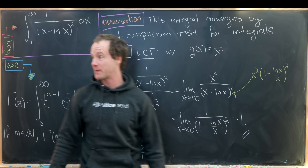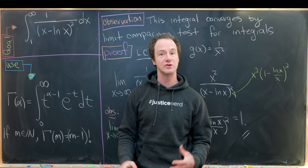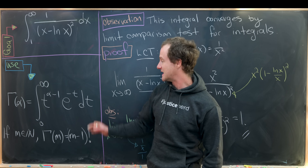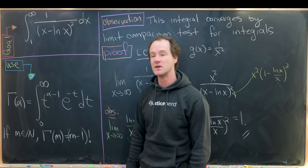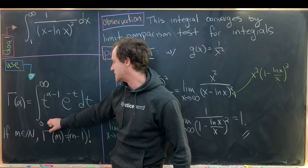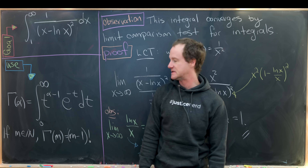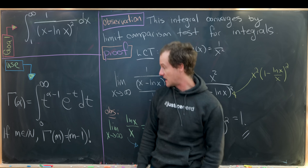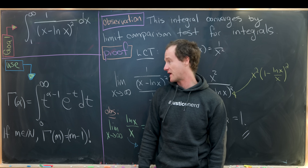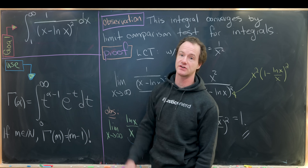Now we're ready to find its value expressed as an infinite sum, using the integral representation of the gamma function. We define gamma(α) as the integral from 0 to infinity of t^(α−1) e^(−t) dt, and if m is a natural number, gamma(m) equals (m−1) factorial.